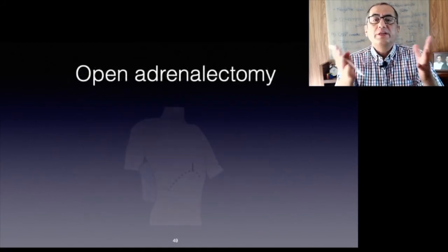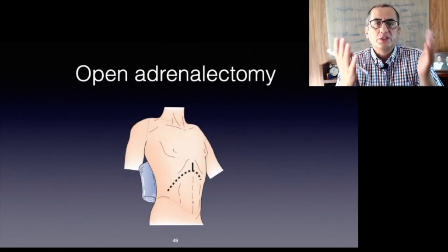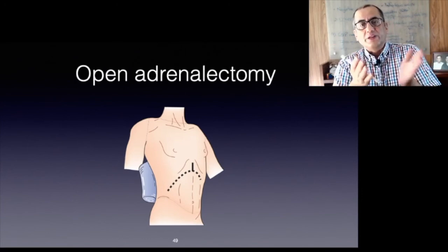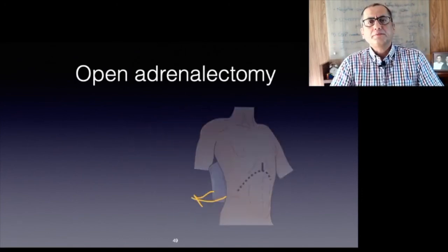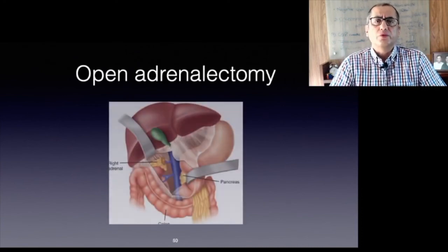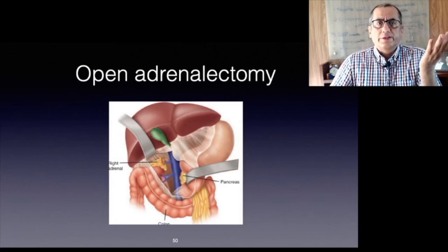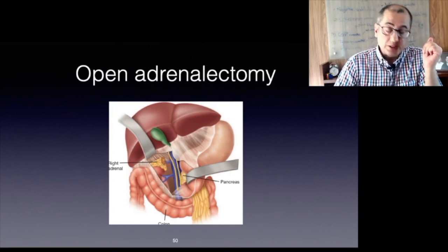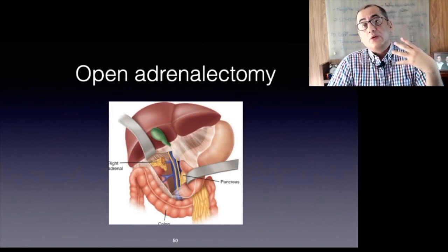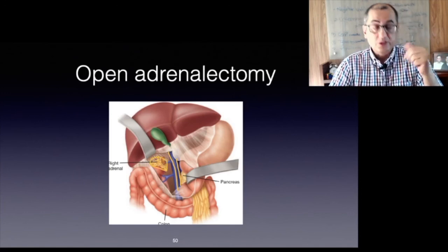Open adrenalectomy is almost exclusively performed when a malignant adrenal tumor is suspected. The patient is tilted towards the opposite side. On the right side, the hepatic flexure of the colon is mobilized and the right liver lobe is retracted cranially to achieve optimal exposure of the IVC and the adrenal gland. It is important to always visualize and safeguard the IVC.